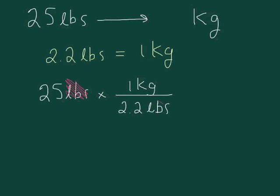We have pounds on the top, pounds on the bottom, so they cross off. And now we're simply left with 25 times 1 kilogram on the top and the number 2.2 on the bottom.